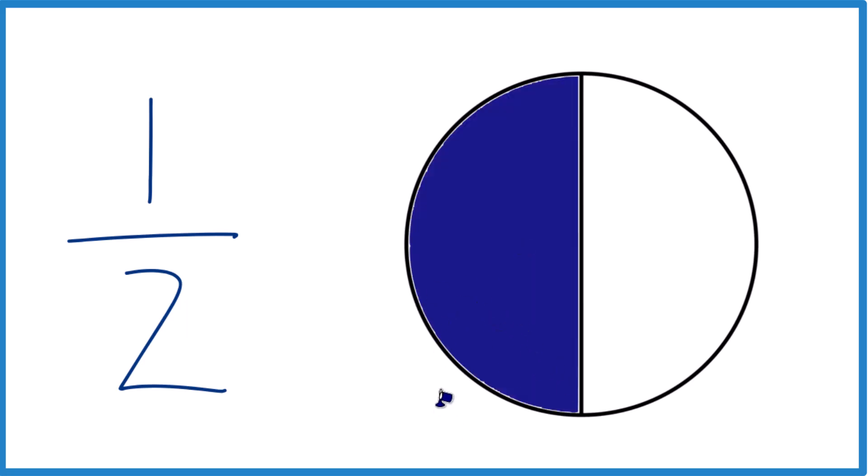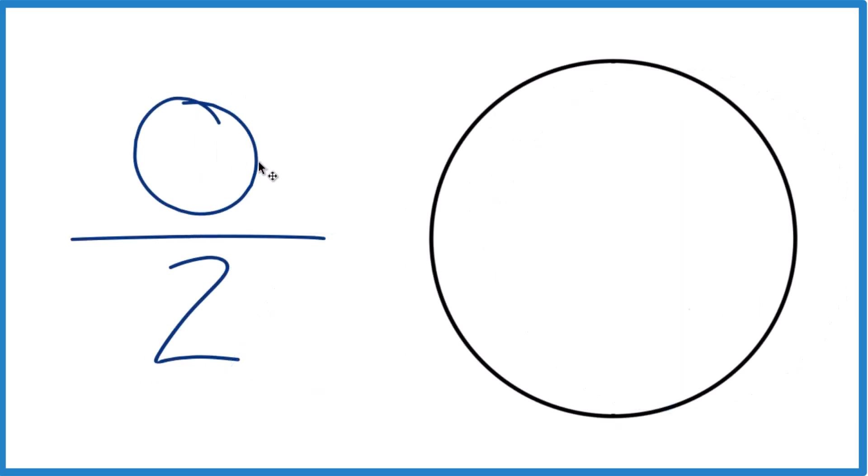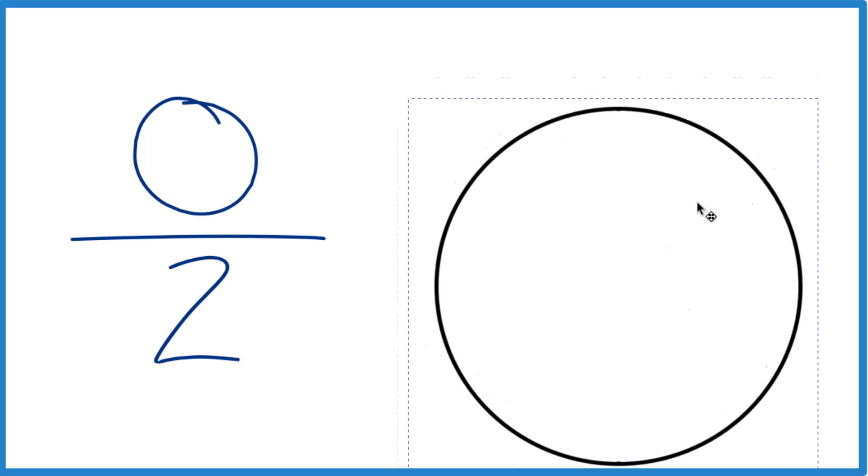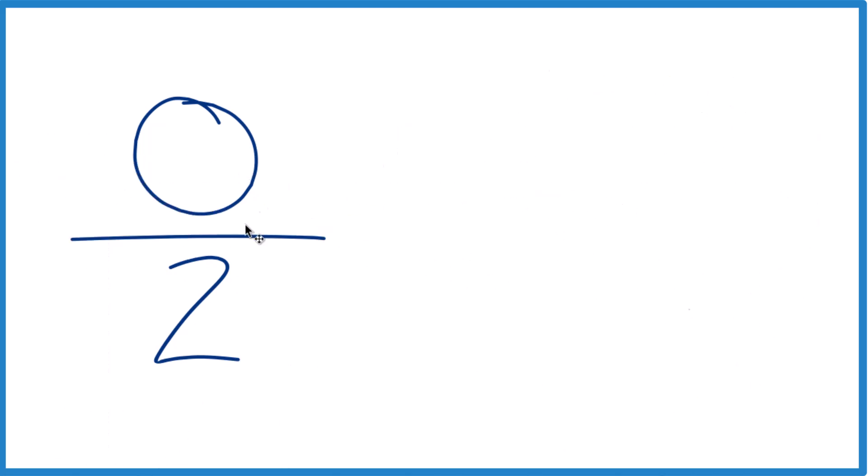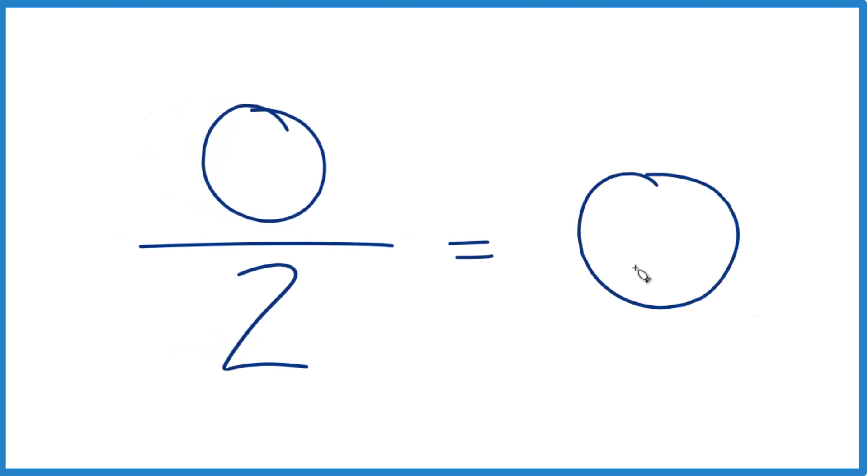So we're familiar with that. But what about 0 over 2? What does that equal? So we're saying that we have 0 parts divided into two pieces. Well, that means we don't have any parts. So we don't have anything, and we divide nothing into 2, we just get 0. So 0 over 2, that equals 0.